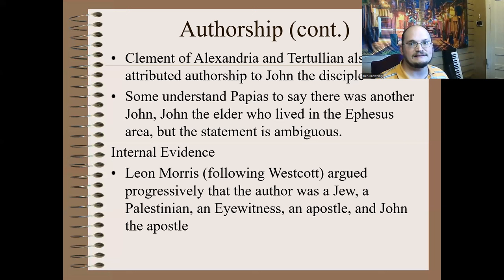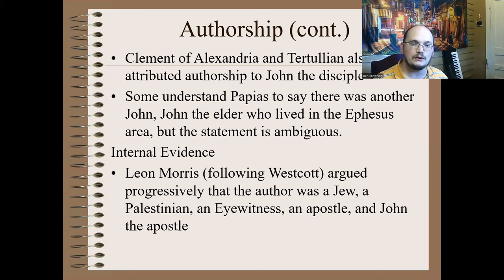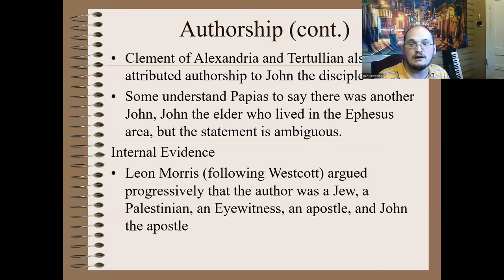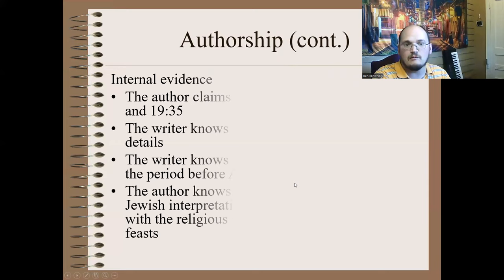Now let's talk about internal evidence. We don't have a place where it says 'I, John, wrote this book,' but we do have some evidence. Commentator Leon Morris argues the internal evidence suggests the author is Jewish — looking at the writing style, the points made, and the knowledge of Palestinian geography — concluding the person was a Jew, probably from Palestine, probably an eyewitness to the events, an apostle, and therefore John the Apostle.